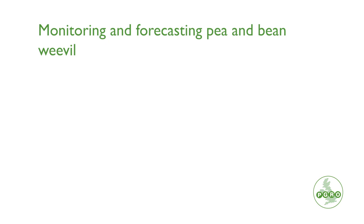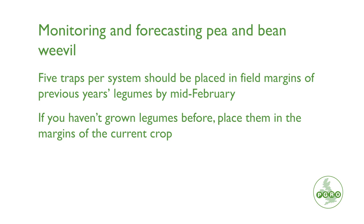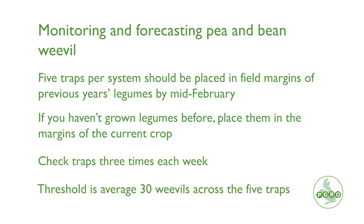You can monitor for these pests using a very good and well-established trap system that is now available from Copper UK. These consist of five plastic cone-shaped traps that are placed on the field margins of last year's crop. If you haven't had a crop last year, you can place them on the field margins of your planned crop or your existing crop of legumes. There are five traps in a system and they need checking three times a week. The threshold in traps is an average of 30 across the five traps.